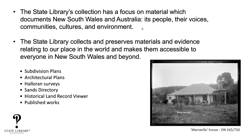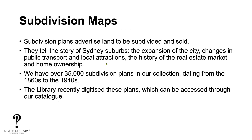A lot of the things we collect are a mixture of published and unpublished items. Anything published in the State of New South Wales is considered legal deposit, so we will get a copy of that. Things like the subdivision plans and architectural plans are considered unpublished, and we obtain those through bequests, donations, and sometimes purchasing. Into subdivision plans — subdivision plans advertise land that is to be subdivided and sold. As we go through them, we can see they tell the story of Sydney suburbs, the expansion of the city, changes in public transport, local attractions, and the history of the real estate market. We have more than 35,000 subdivision plans in the collection dating back to the 1860s and up to around the 1940s. These have all been digitised and are available through the catalogue.